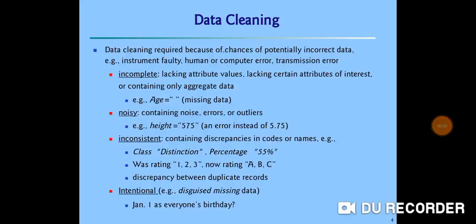Now, we will start the first point that is data cleaning. Data cleaning required because of chances of potentially incorrect data. Examples will be instrument faulty data or human or computer error or transmission error. Incomplete data means it lacks attribute values, lacking certain attributes of interest or containing only aggregate data. Suppose in our database, some missing data is present like age value is not written. It is called incomplete data.